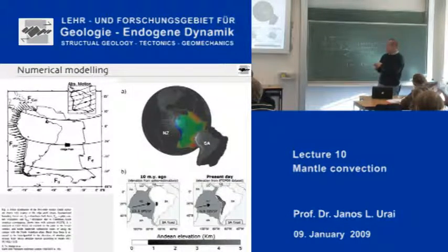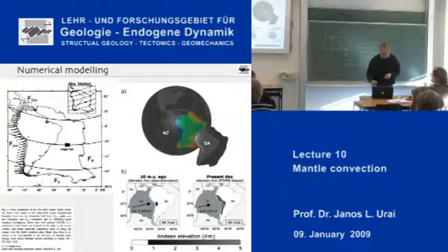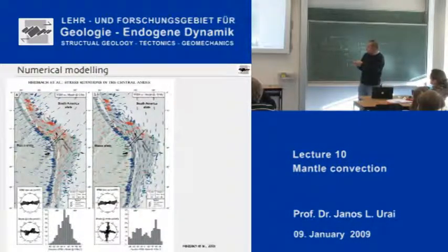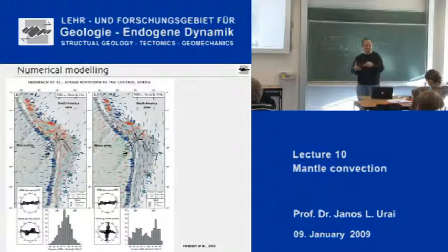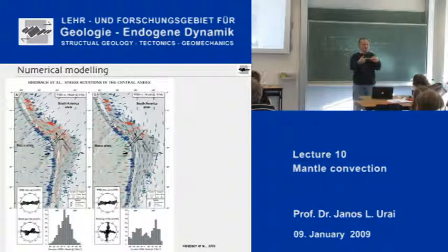If you can do that, then you can impose on these computer models all the forces that you think are important. So you can put in the ridge push, the slab pull force, and so forth. Then, just like with mantle convection, you do parameter studies. This study actually compares the calculated stresses with the measured stresses. All these little lines that you see here are the principal stresses — the biggest horizontal principal stress, which could be sigma 1 or sigma 3, as we remember from the stress lecture.